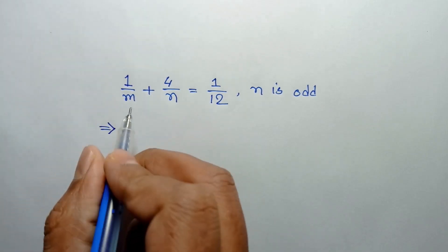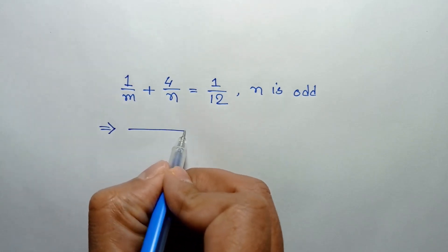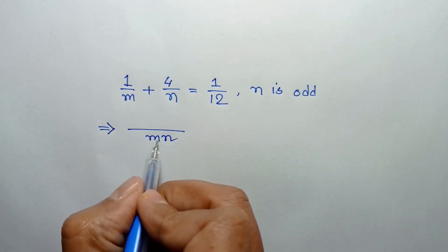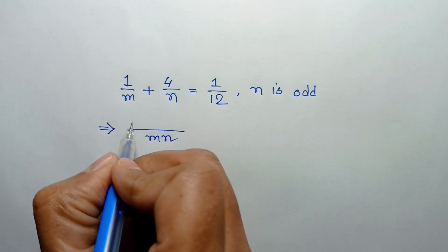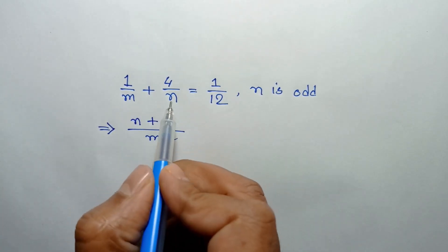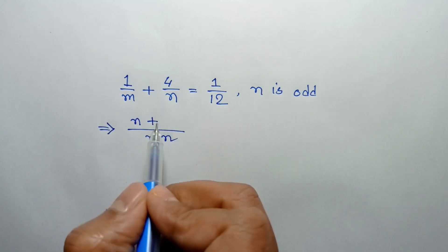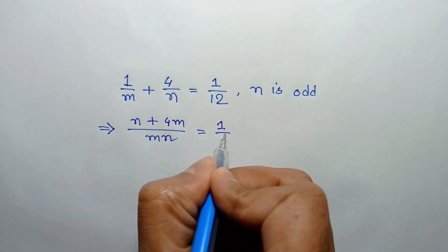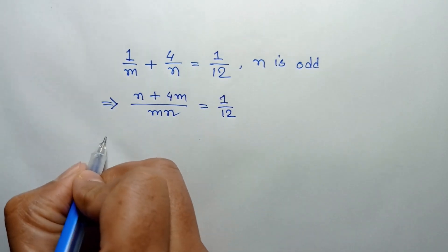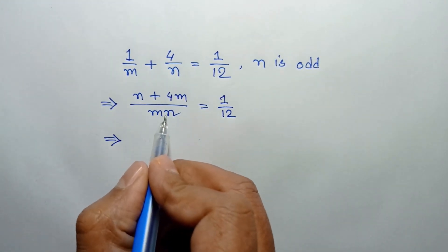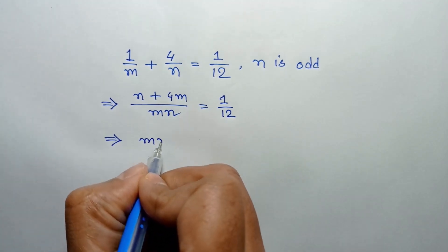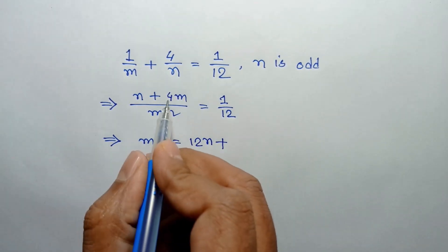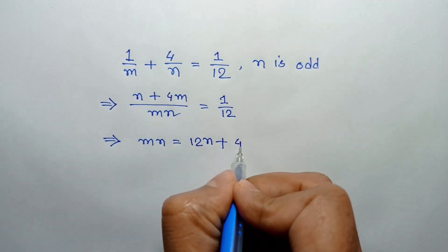The LCM of m and n is mn. So mn divided by m is n, and n times 1 is n; plus mn divided by n is m, and 4 times m is 4m — all equal to 1 over 12. Now applying cross multiplication, we can write mn times 1 is mn, equal to n times 12 is 12n, plus 4 times 12 is 48m.